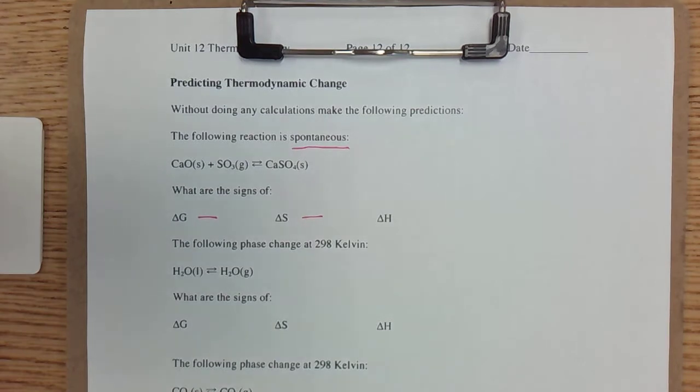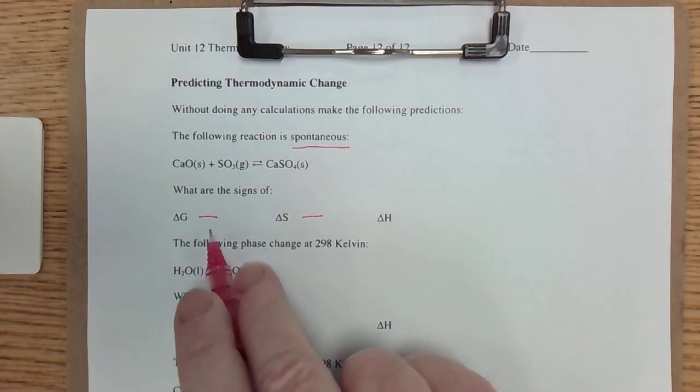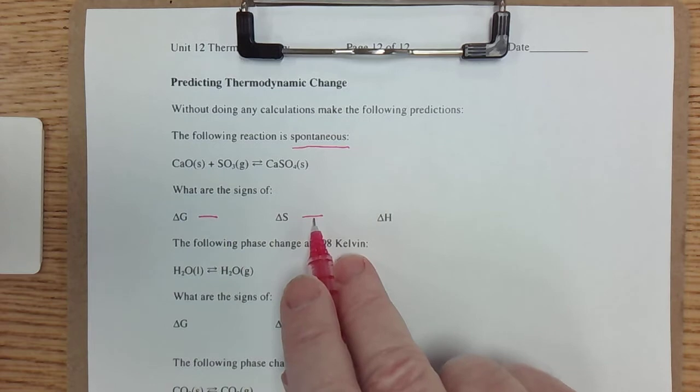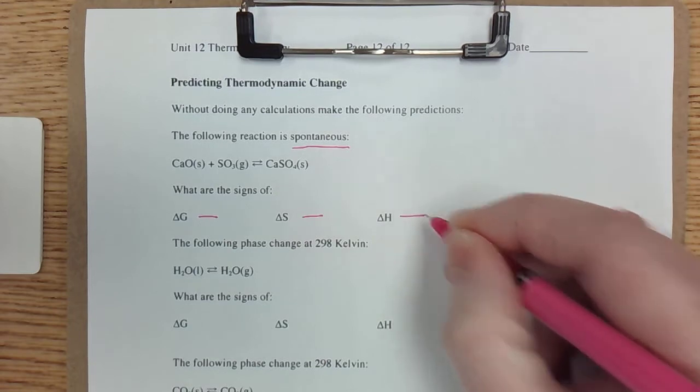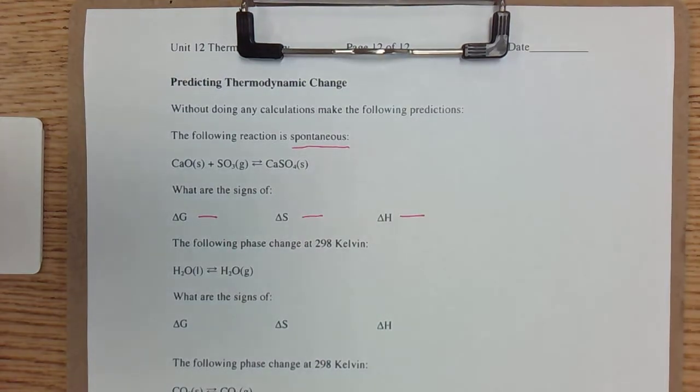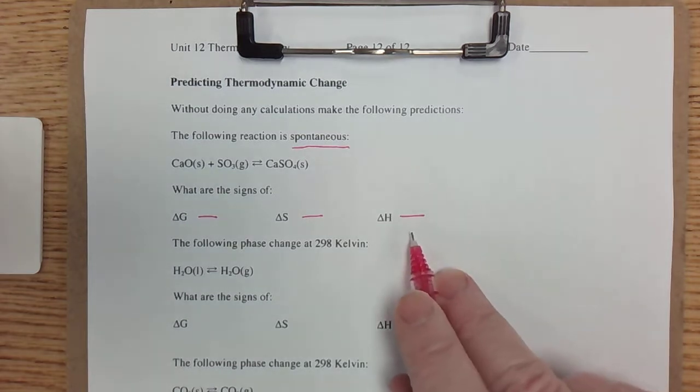Now this gets interesting because I need something to drive this reaction, something that makes it spontaneous. ΔS negative does not tend towards spontaneity, which means in this case it has to have a negative ΔH for the reaction to be spontaneous. And that would be what we call the driving force.